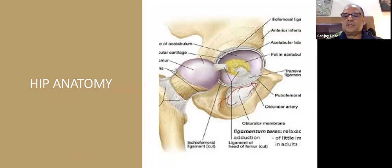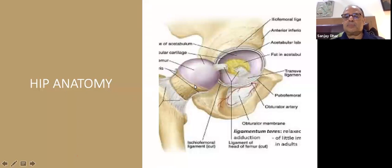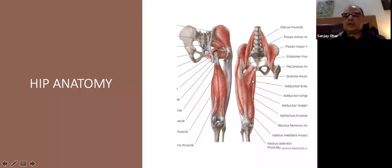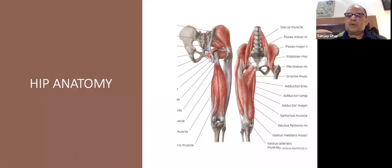The hip has a cup-like joint with triradiate cartilage connected with the femoral head via the ligamentum teres. The obturator foramen is nearby. There are ischiofemoral and iliofemoral ligaments — very strong ligaments that hold it tightly. Then there are strong muscles: posteriorly the gluteus maximus, rotators, hamstrings; anteriorly the quadriceps tendon and adductor magnus medially.